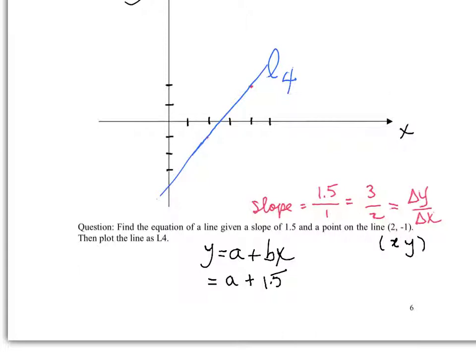But we do know one pair of x and y. This is one point. So let's use these values: x would be 2, and y would be -1. Let's use that to solve for a, which should be true for all pairs that fall on the line. So this is 3.